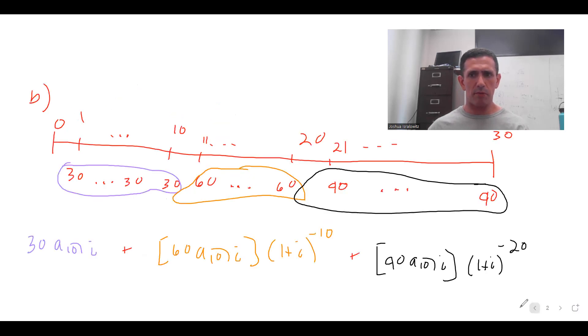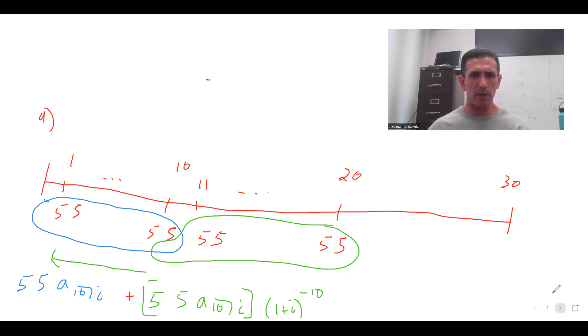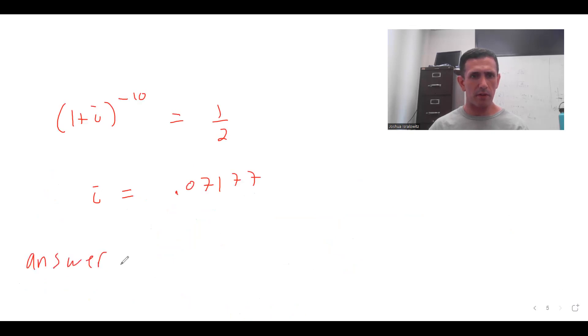So it's easiest to, I would say, plug into this here. So in particular, this is going to be 55 A_10 at 0.07177 plus 55 A_10 at 0.07177. And you do this, you're going to get 574.73.